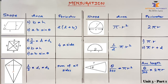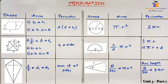The next very important shape is circle. The area of a circle is given by π × r², where π is taken as the calculator value and r is the radius. The perimeter — or circumference — of a circle is 2πr, where again π is the calculator value and r is the radius.